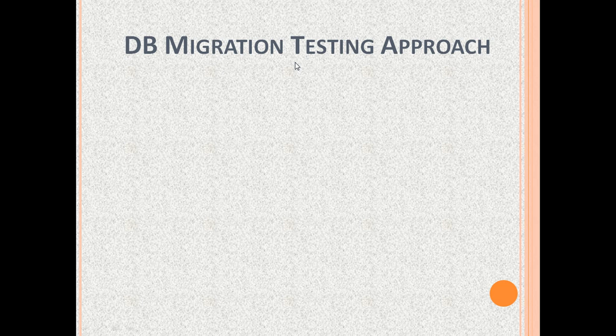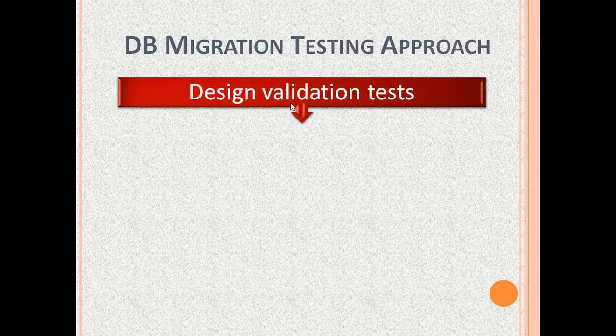Now let us see the database migration testing approach. It consists of the following activities. First, we design the validation tests. The validation tests include SQL queries to test database migration. We need these validation queries to cover the ETL testing scope explained in the previous slide. We need queries for both the source and the target databases. We should order our queries — for example, we should first test if all the customer records are migrated, and only then test if all the order records are migrated, because the order records depend on the customer records.